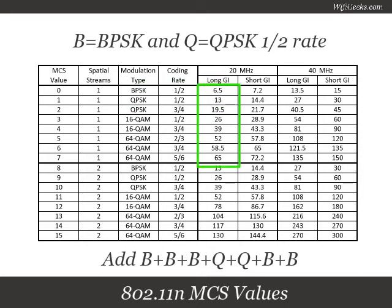Let's take 6.5. If you add B you get 13. Add B again and you get 19.5. Add B once more and you get 26. Add Q and you get 39. Add Q again and you get 52. Add B and you get 58.5. And finally add B again and you get 65.